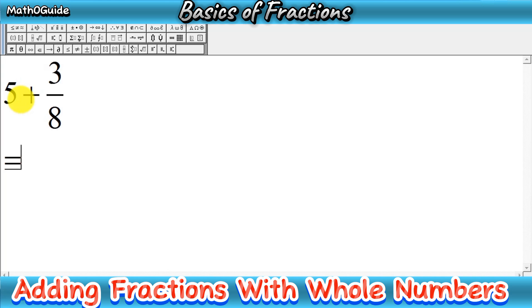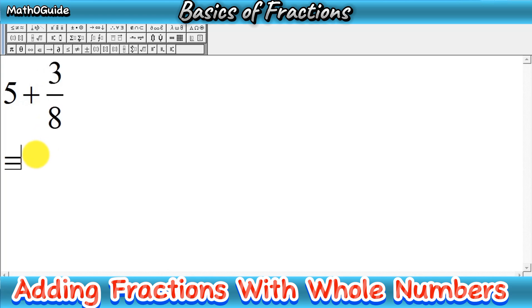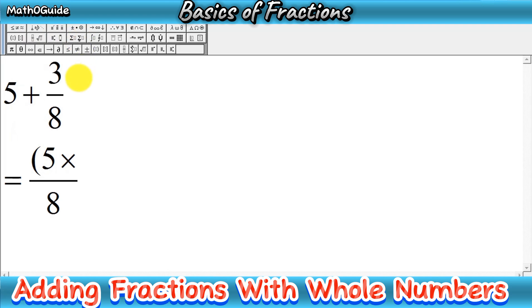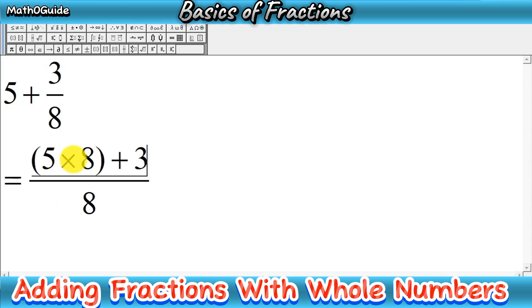Let's start. We have to add 5 to the fraction 3 over 8. Simply, you write a new fraction where the denominator will be 8, as in the question — we have only one fraction and the denominator equals 8. So you write 8 here. Then you multiply this single denominator by the whole number, which is 5. So we multiply 5 by 8, then write the sign of addition. We have a sign of addition here, so after multiplication you write the numerator of the fraction, which is 3, as it is.